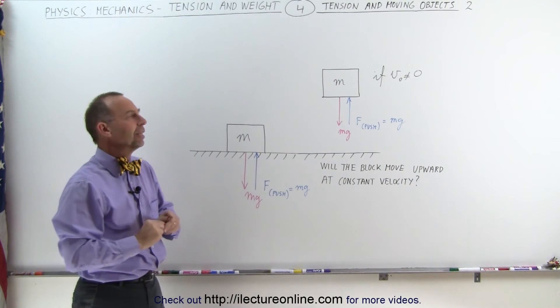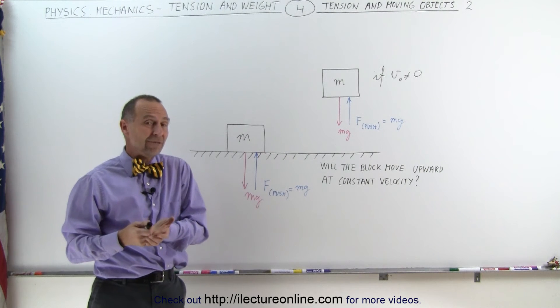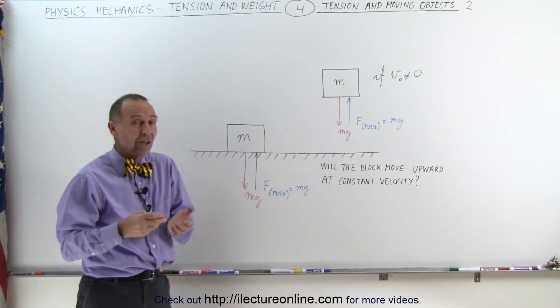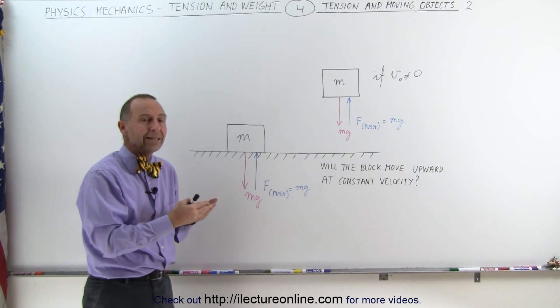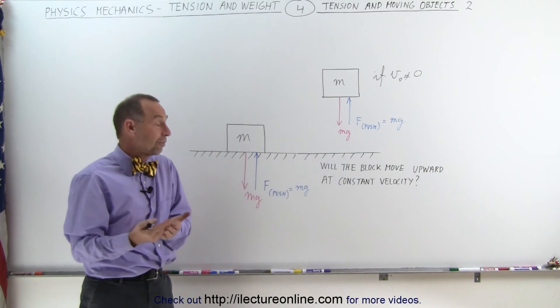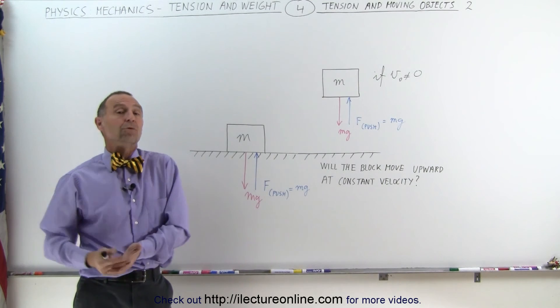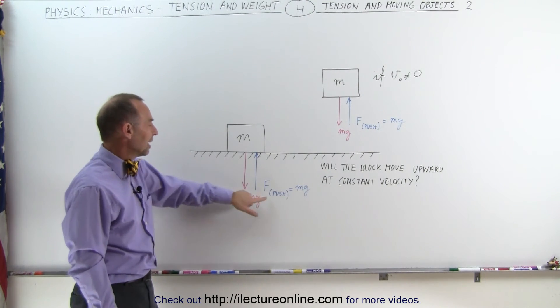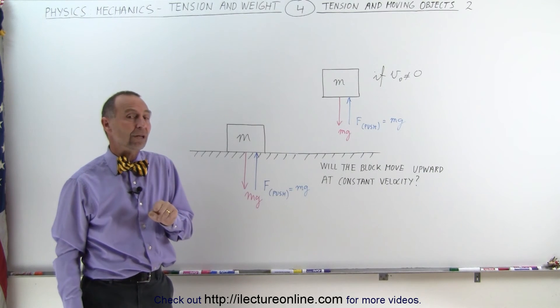And that's where the confusion often comes in. Sometimes you'll read a physics problem in the book, and it says the force is applied equal to the weight, and the block is moving upward at a constant velocity, and everybody says, how can it move upward at a constant velocity if these two forces are equal to one another?